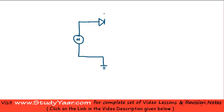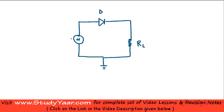Now, this diode is connected to my load resistor. Let's just say my load resistor is like this. I connect this to the ground as well. This is my RL load resistor. This is my diode D, and this is my input power supply. I am assuming it is a sinusoidal power supply which looks like this.